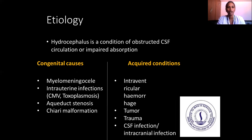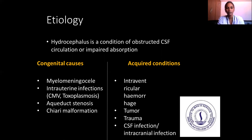Hydrocephalus involves obstruction, alteration of circulation, or impaired absorption of CSF. It is classified as congenital or acquired. Congenital causes include meningomyelocele, intrauterine infection such as CMV and toxoplasmosis, aqueduct stenosis, and Chiari malformation.